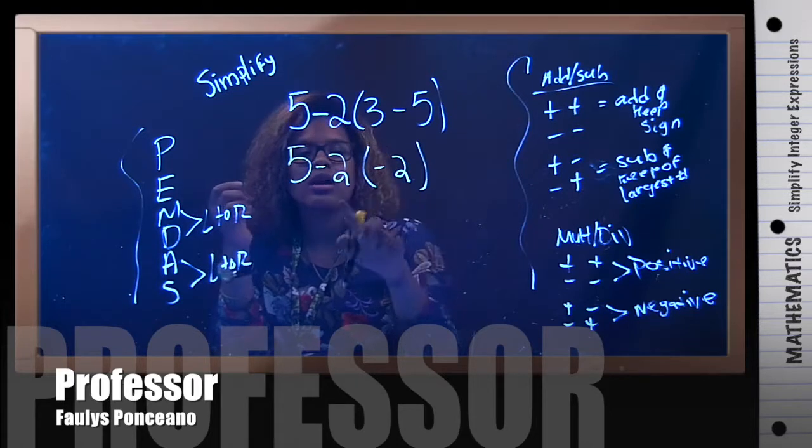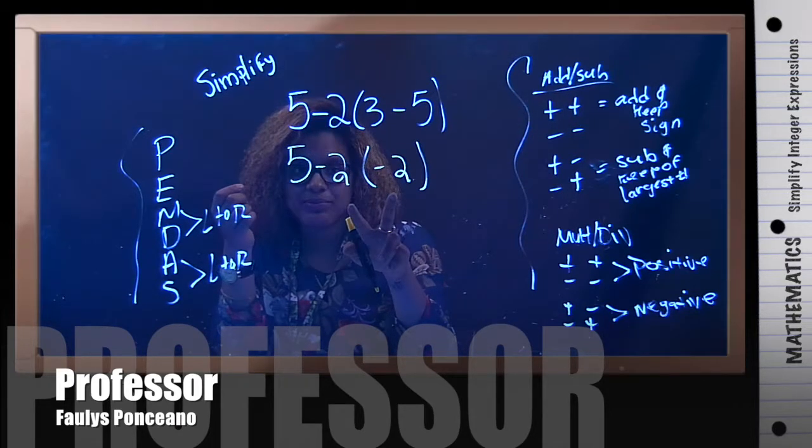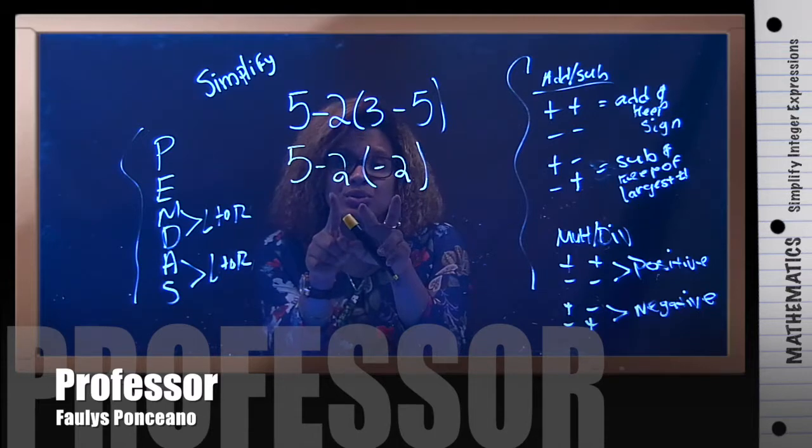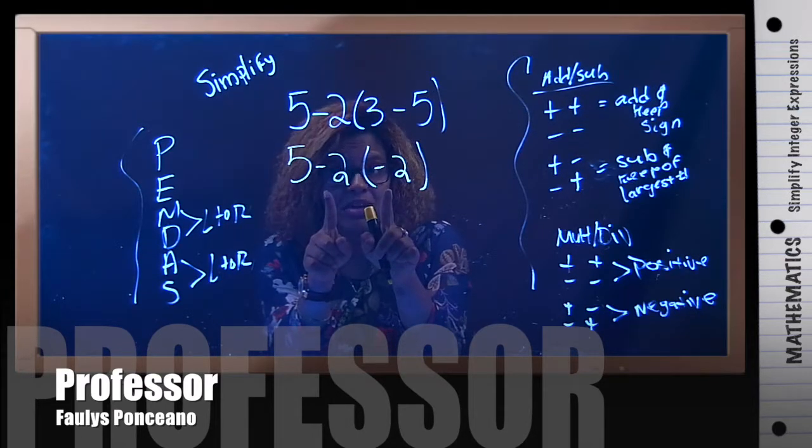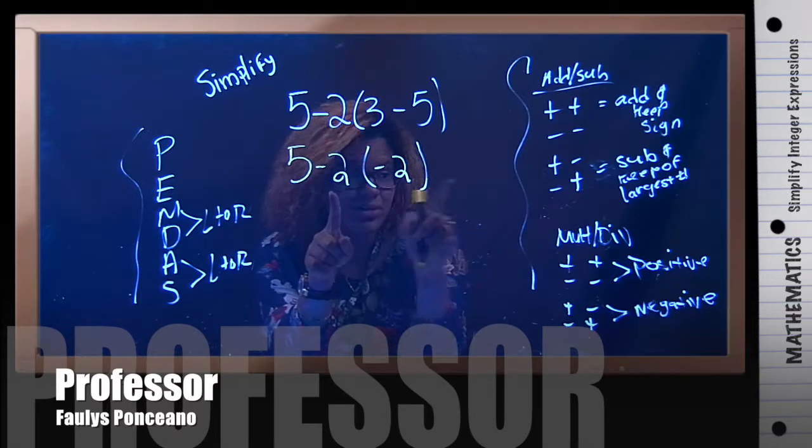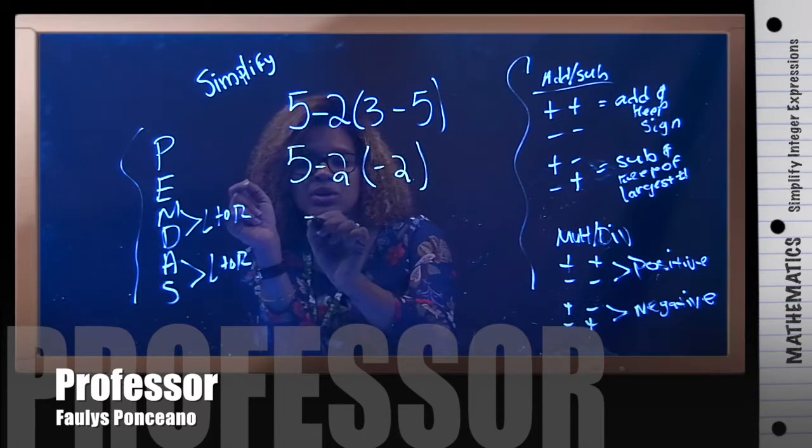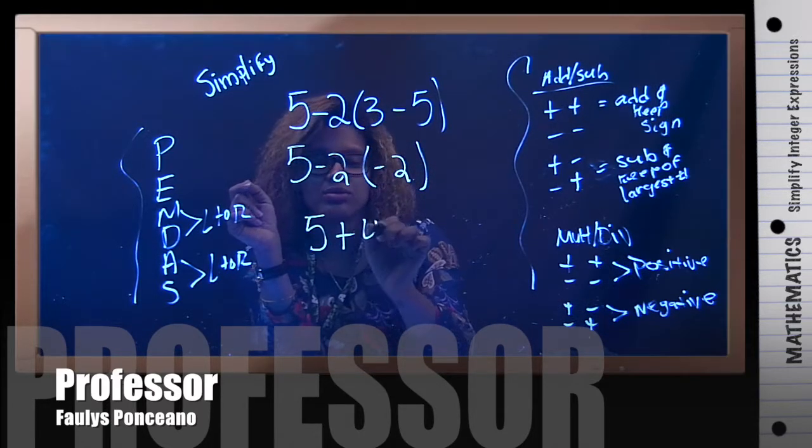Then I have a multiplication here. I'm going to multiply negative 2 times negative 2. Both signs are the same, therefore I'm going to have a positive answer, right, positive. So 5 plus 4.